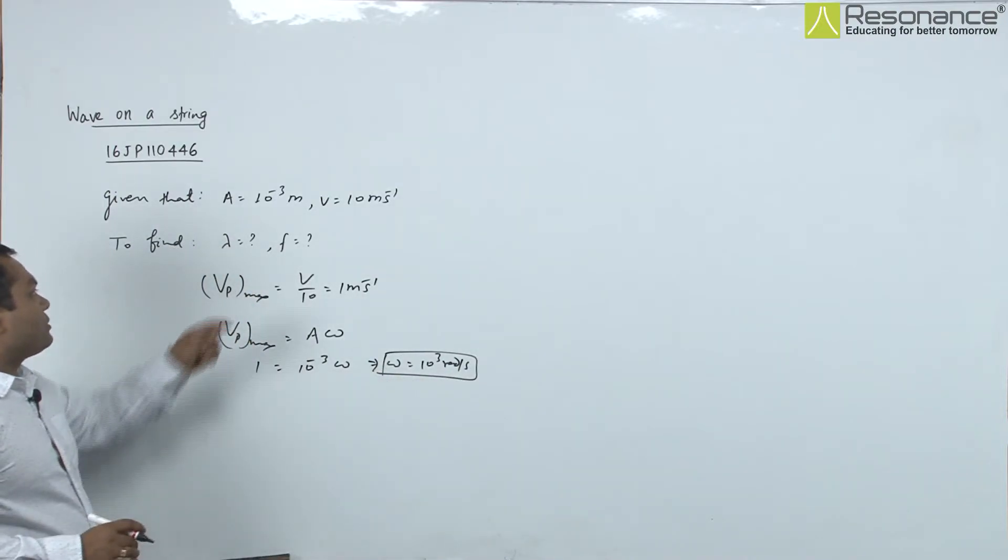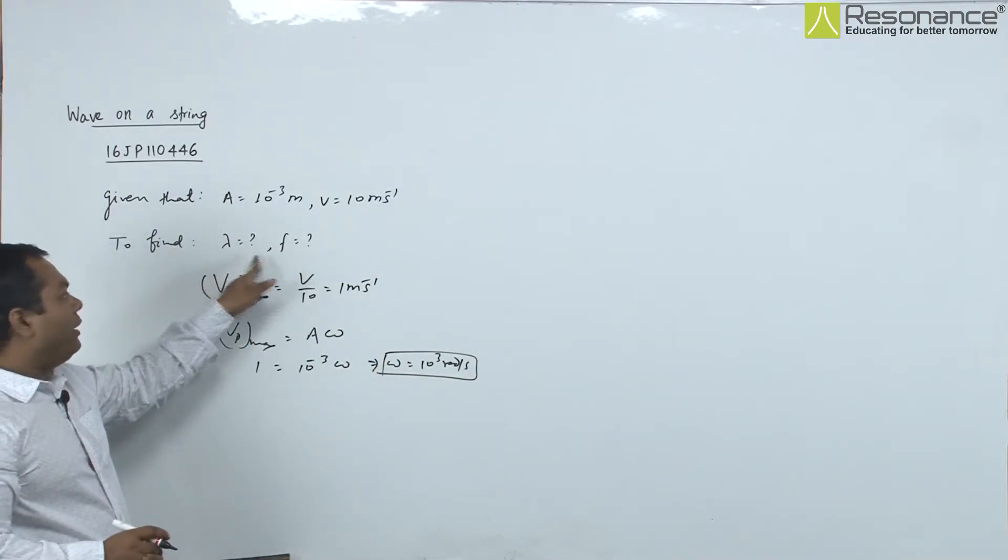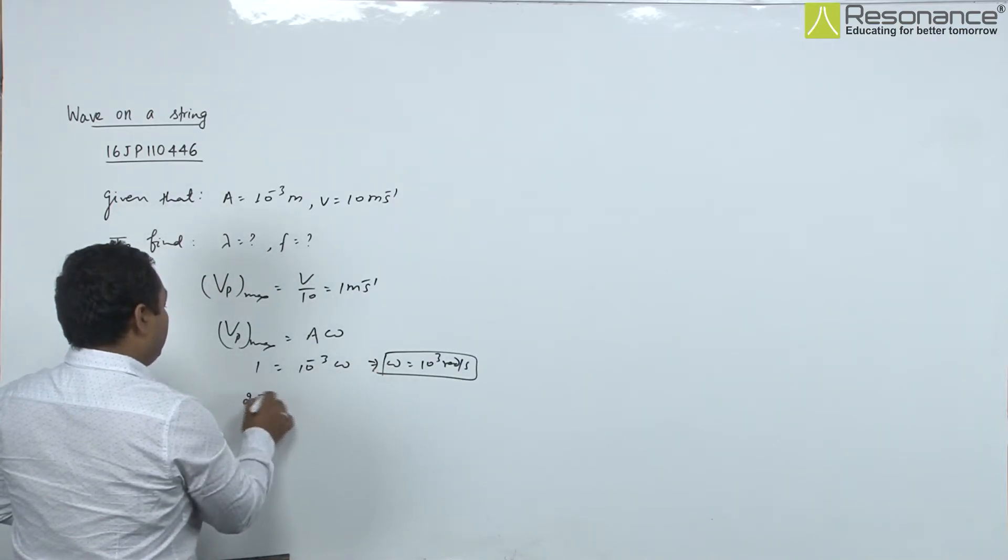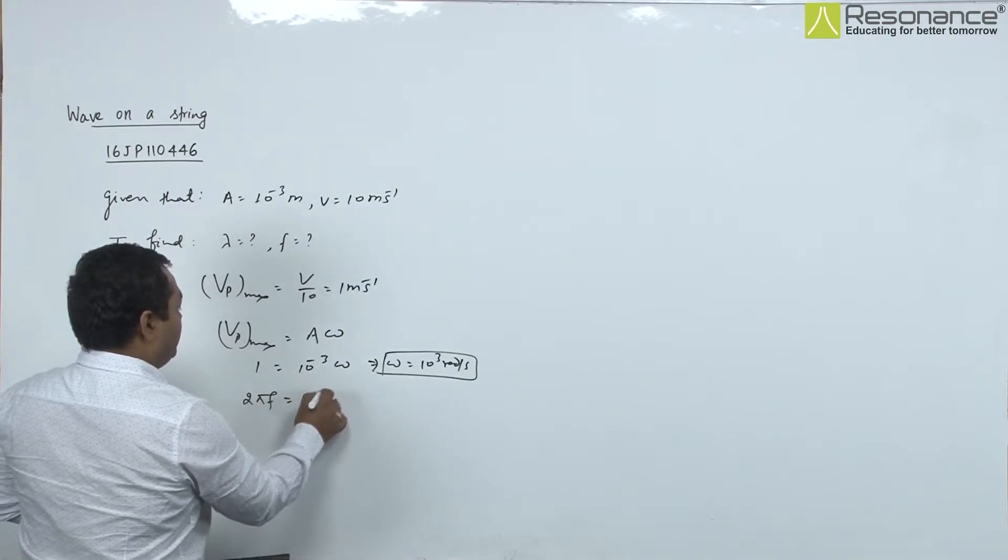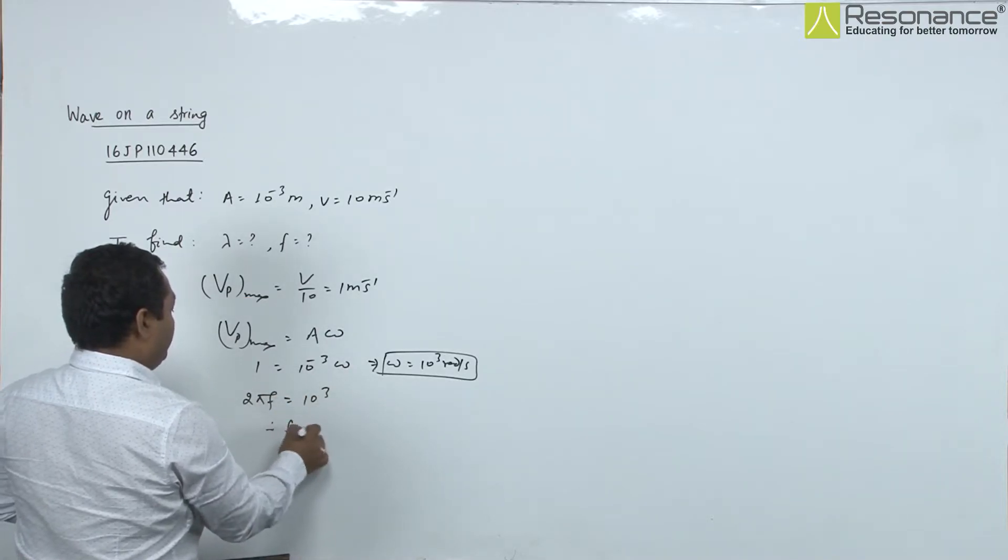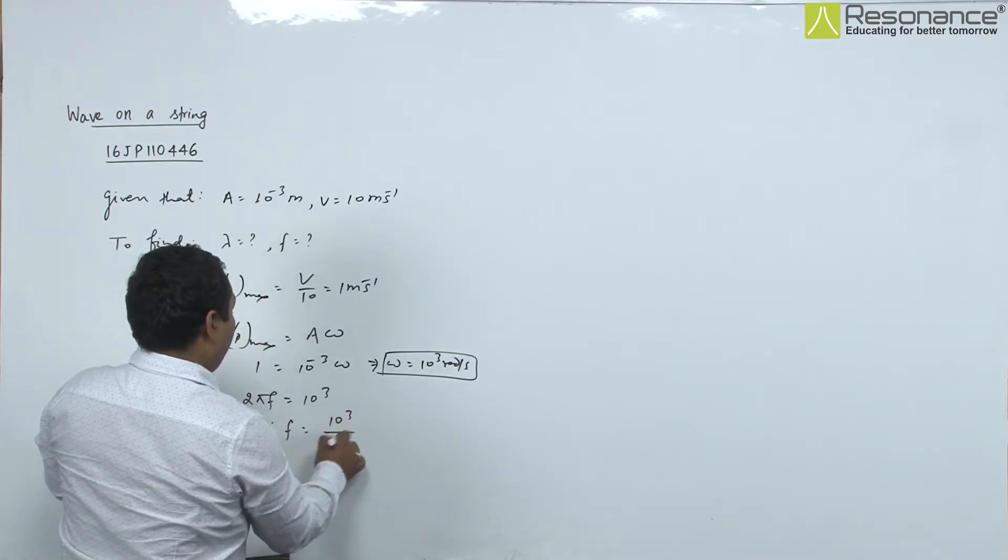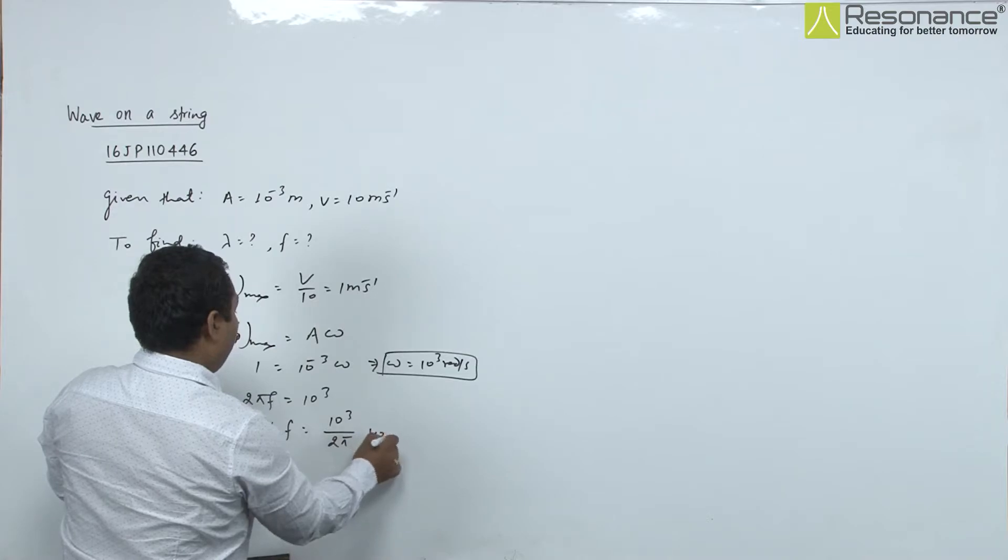The question asks to find lambda and frequency f. From the formula omega equals 2π f, we get 10^3. Therefore, f equals 10^3 / 2π hertz.